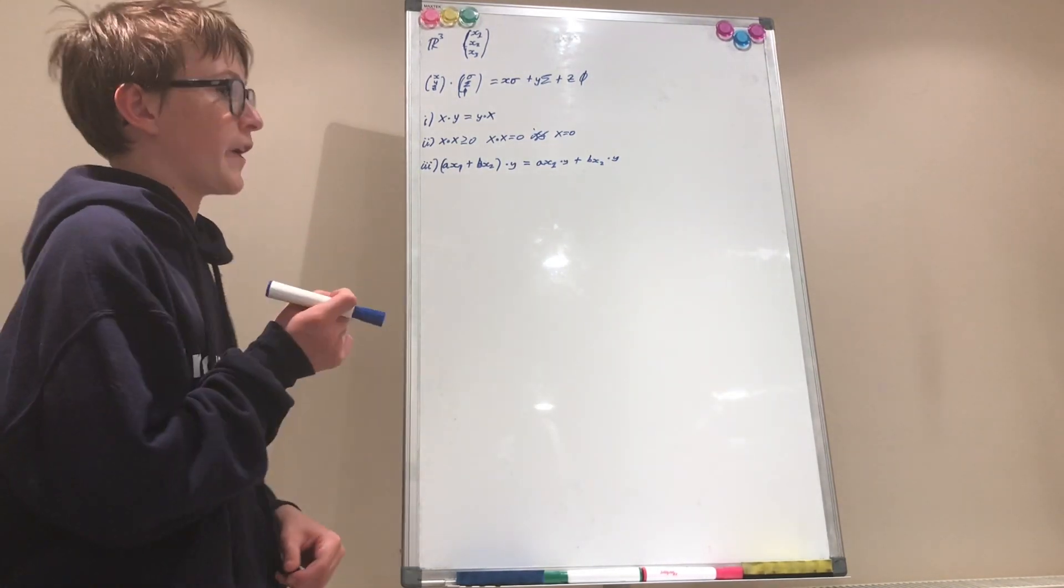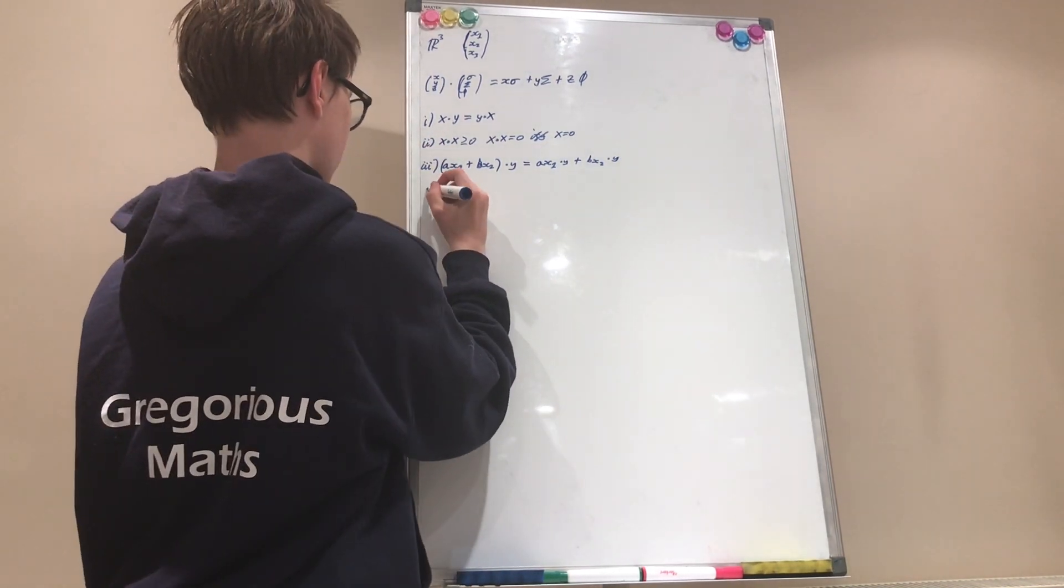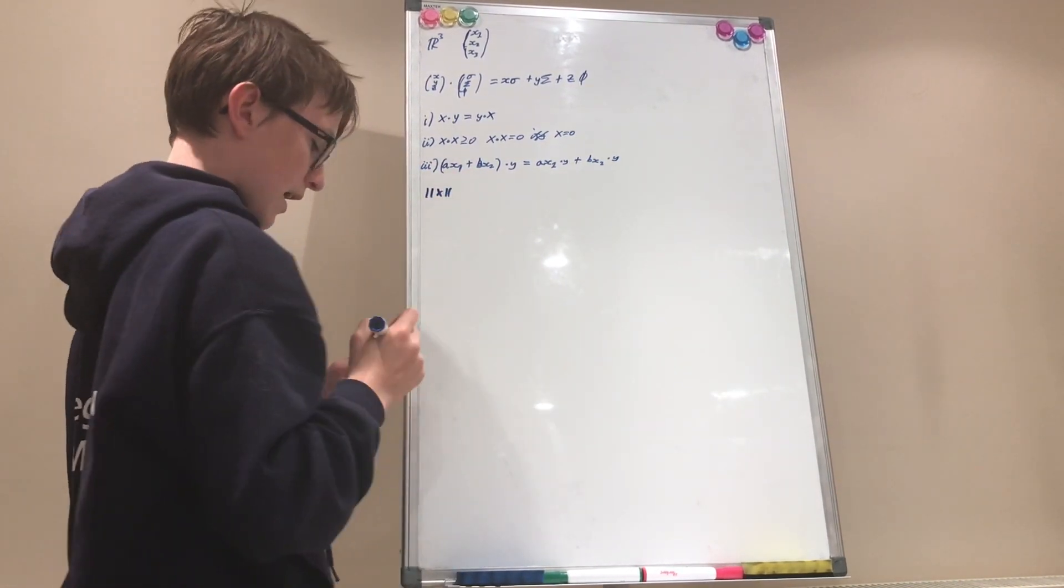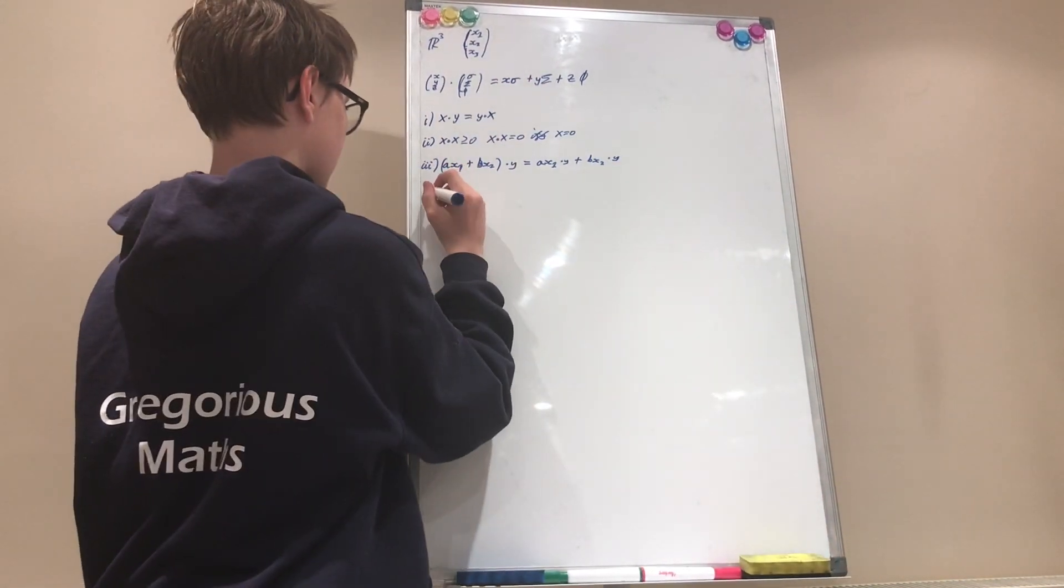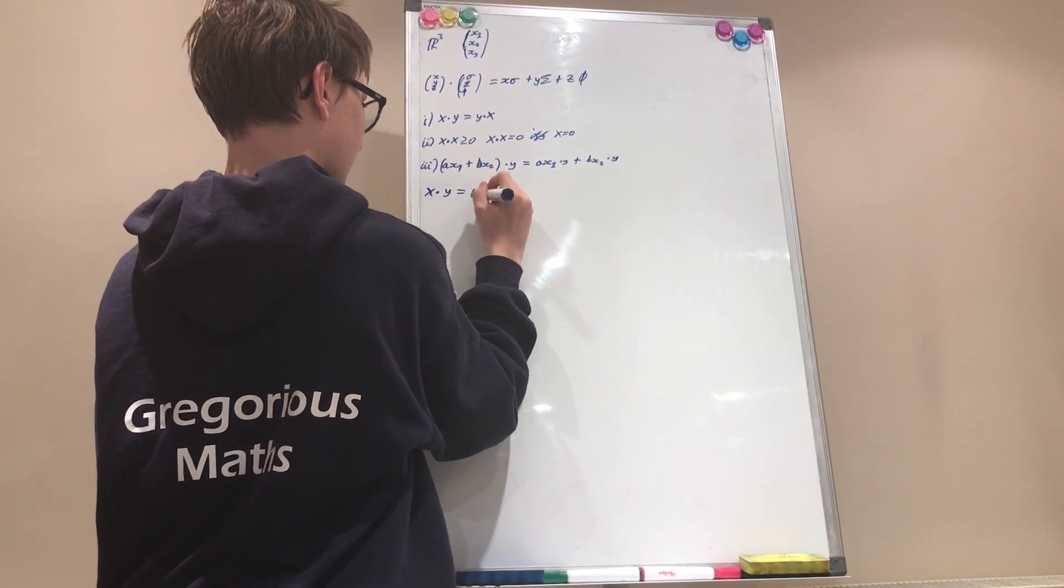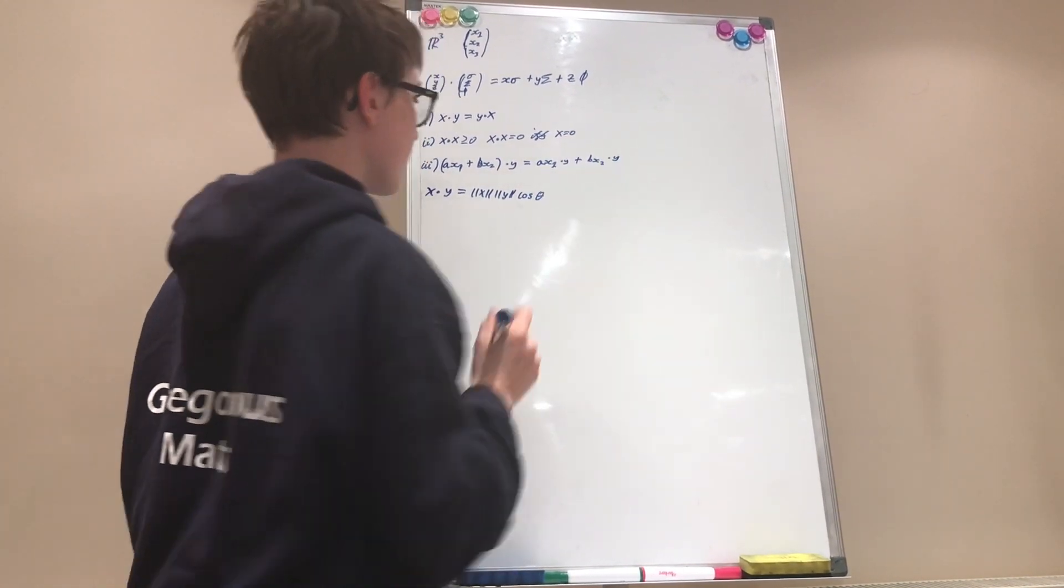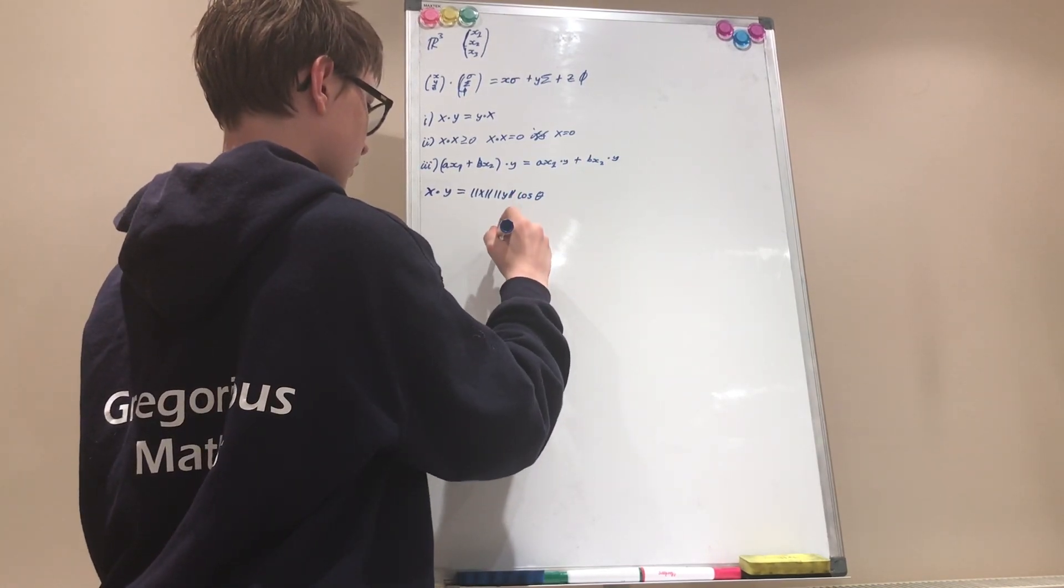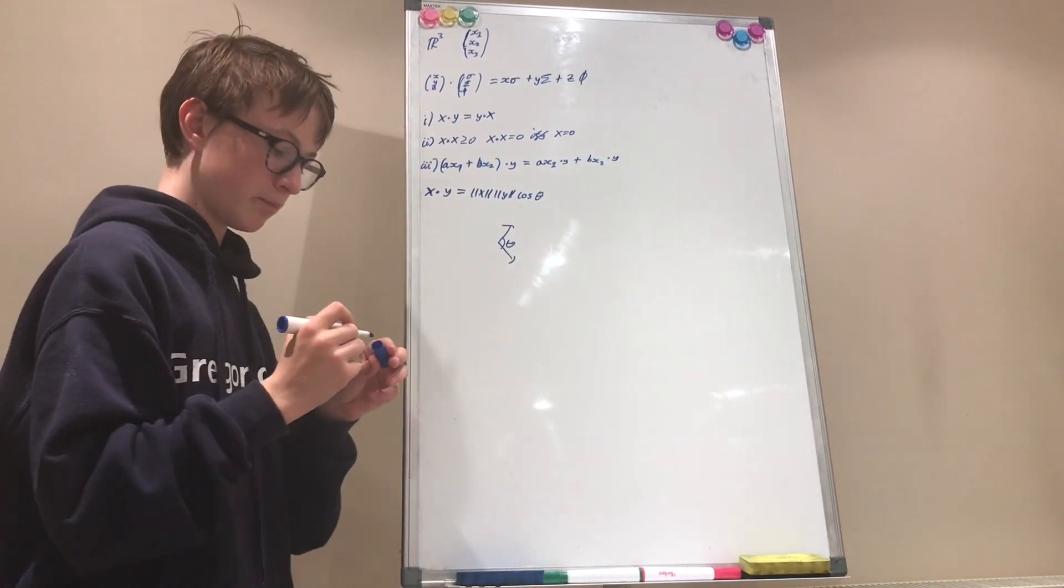And actually we can go further. We can define something called the norm of x. The norm of x is denoted like this, and it satisfies that x dotted with y is equal to the norm of x times the norm of y times cosine of theta, where theta is the angle made by the two vectors x and y. So if you have x and y, these two vectors, theta is this angle made here.